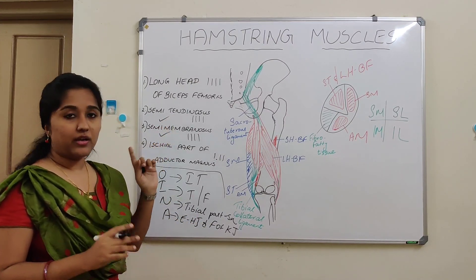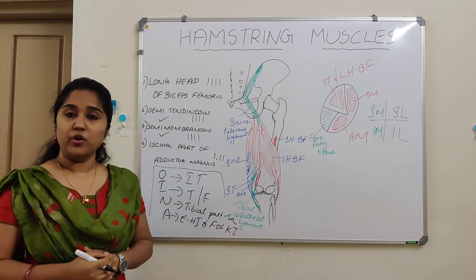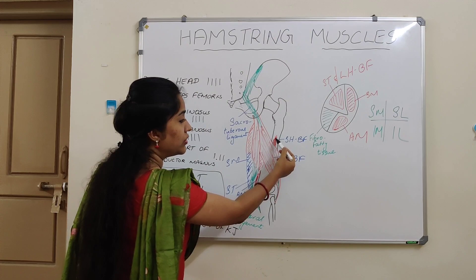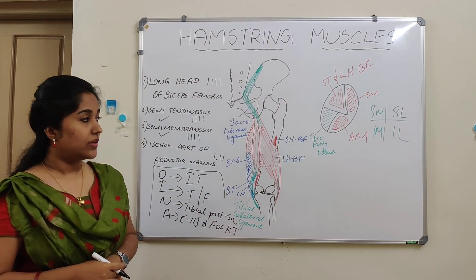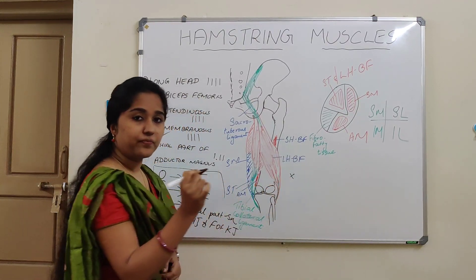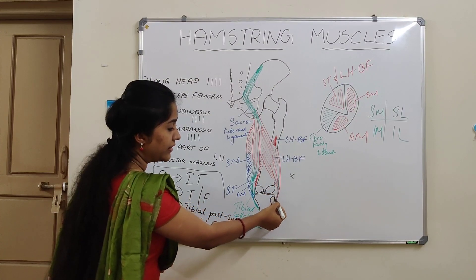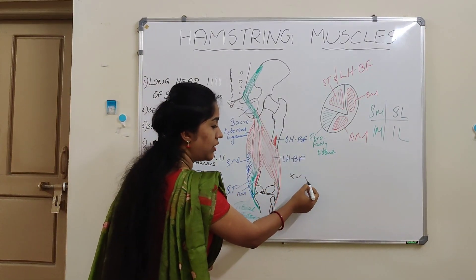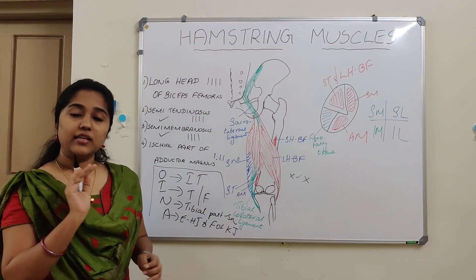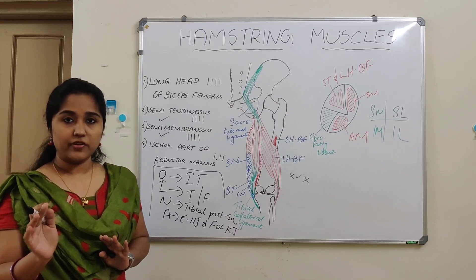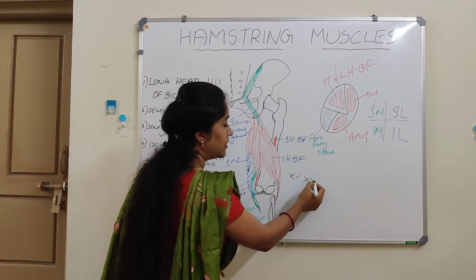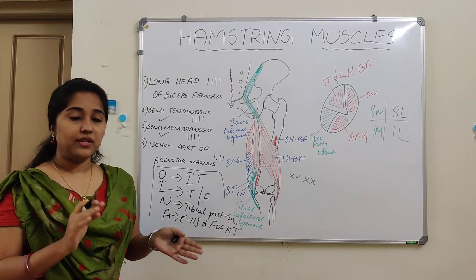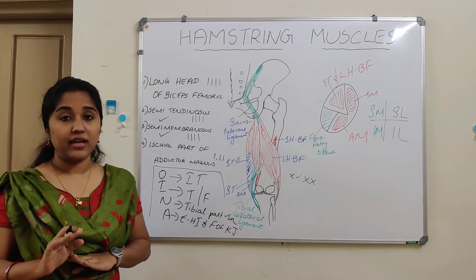So there are two true hamstrings and two modified hamstrings. What about the short head of biceps femoris? It takes origin from the lateral lip of the linea aspera of the femur, so the first criteria is not fulfilled. It is supplied by the common peroneal part of the sciatic nerve, so the third criteria is also not fulfilled. Its action is just flexion of the knee joint — not extension of the hip joint — so the fourth criteria is also not fulfilled. Therefore, the short head of biceps femoris does not belong to the hamstring group. Similarly, the adductor part of adductor magnus is also not in the hamstring group.